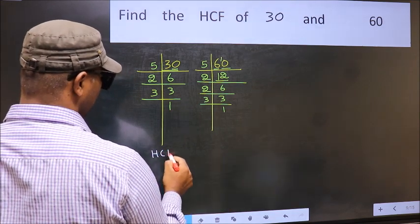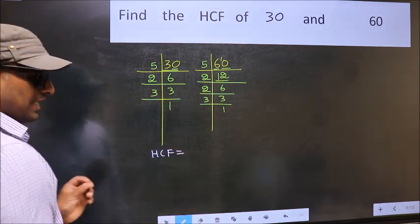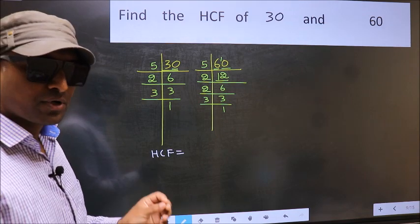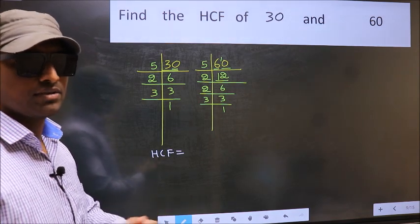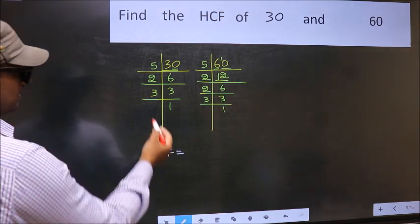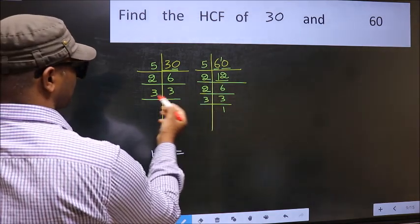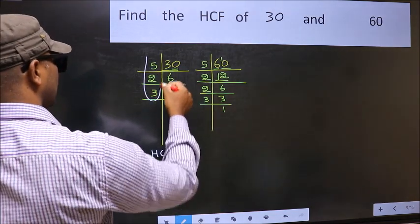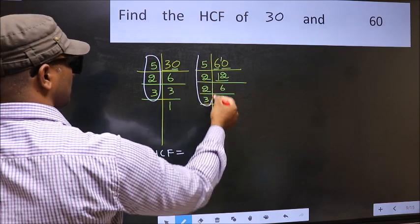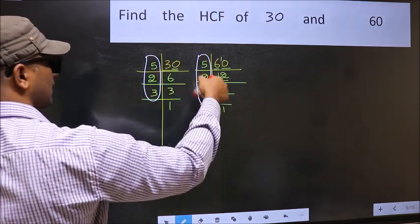Therefore, our HCF is the product of the numbers which should be present in these two places. That is here and also here. Here and here.